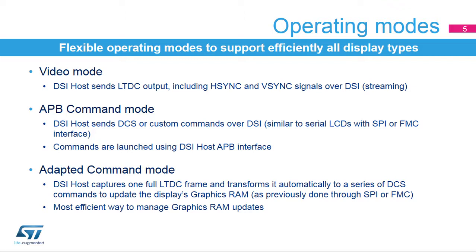APB command mode sends commands over the high-speed link for configuration, as is done using a legacy serial interface such as SPI or FMC. The commands are launched using the DSI Host APB interface.